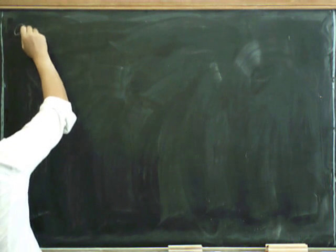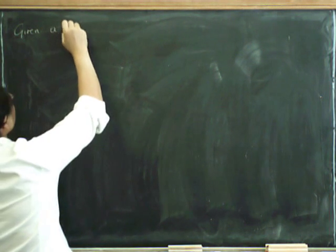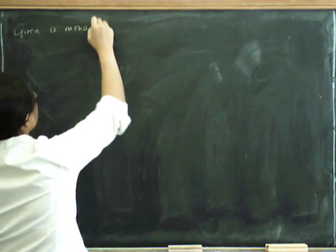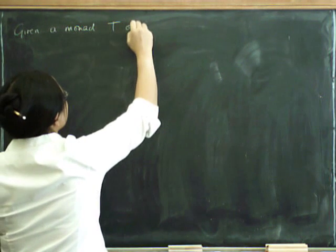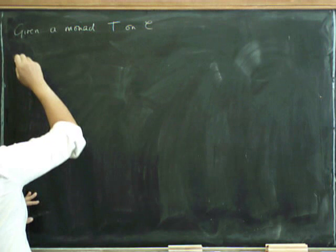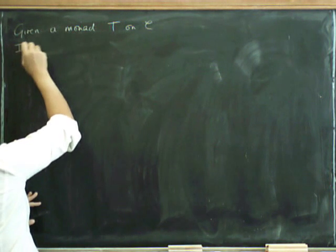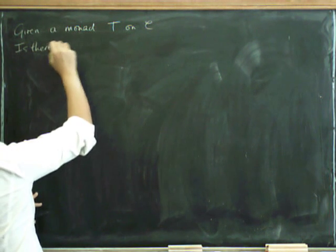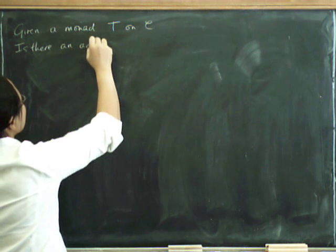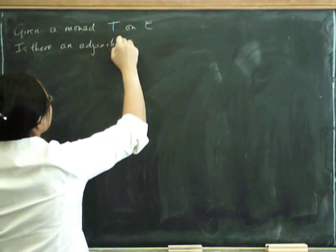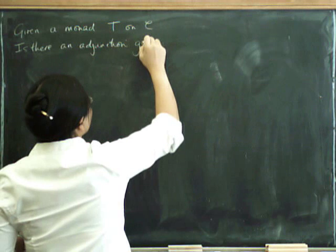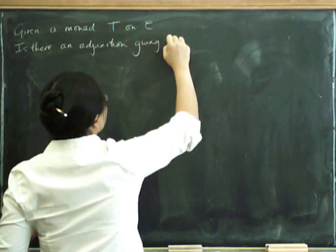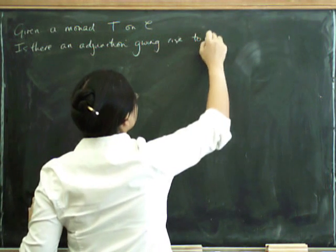Given, the question is, given a monad T on a category C, is there an adjunction giving rise to it?